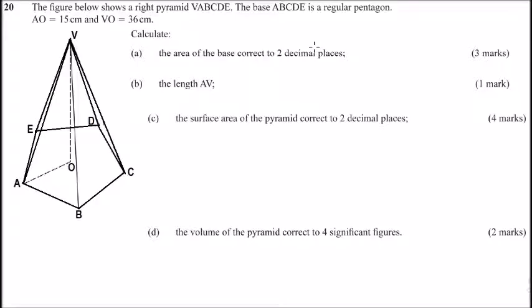This is question number 20. The figure below shows a right pyramid VABCDE. The base ABCD is a regular pentagon. AO is 15 centimeters, so this is 15. VO is 36 centimeters, so that is 36.